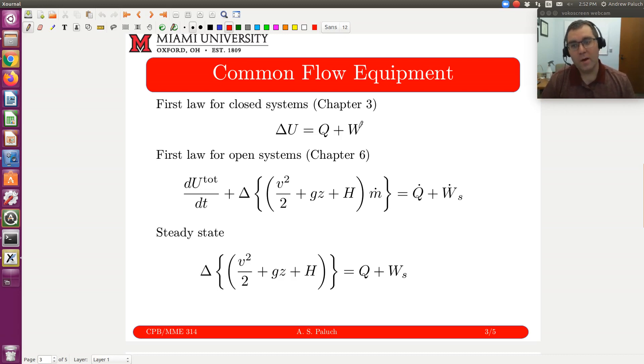Now when I compare that to our general first law balance for open systems, which I have here, the first thing I'll notice is that I have an accumulation term, dU total dt, so this is my non-steady state term. My term in brackets here on the left, my delta, is the difference between my final and initial state. Here I have change due to kinetic energy, potential energy, and now instead of internal energy, I have H, enthalpy.